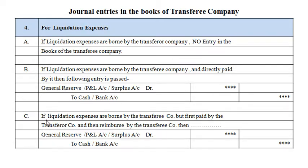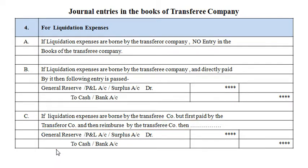Scenario 3: if liquidation expenses are borne by the transferee company but first paid by the transferor company and then reimbursed by the transferee company, the accounting entry is the same as Scenario 2 — General Reserve, Profit and Loss or Surplus Account debit, to Cash or Bank Account.